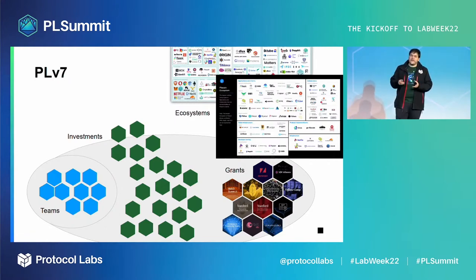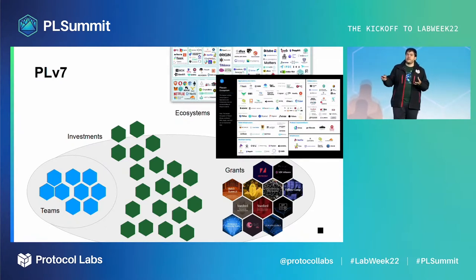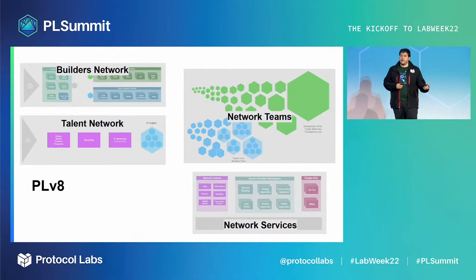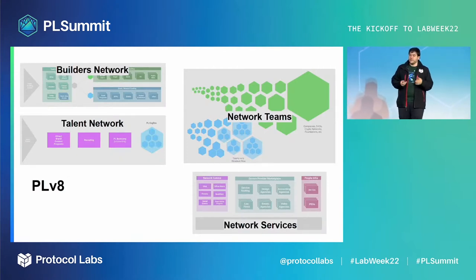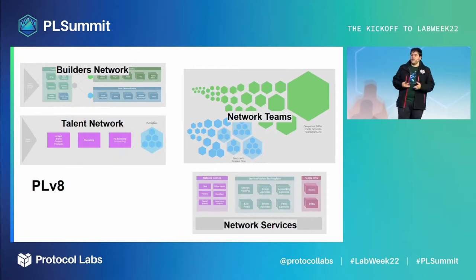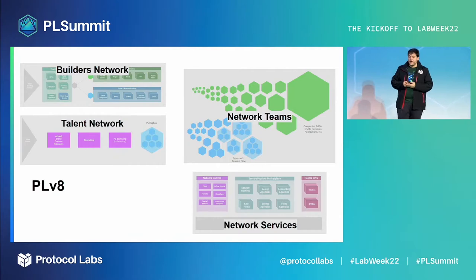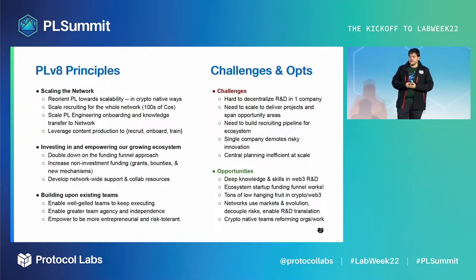One of the things that shifted very significantly from PLV7 to PLV8 was that we wanted to get rid of that cell wall boundary that prevented our teams from working together across the network. We turned the network into PLV8 — we set off to build the builders network and the talent network to help support the range of network teams with a set of network services.